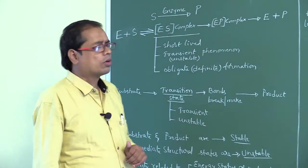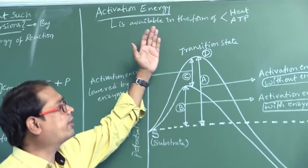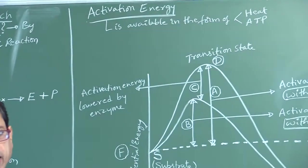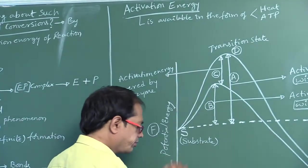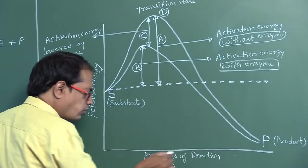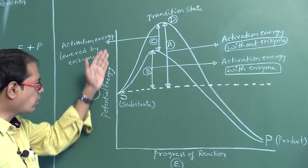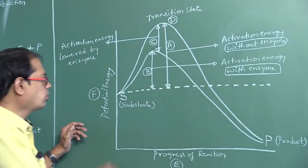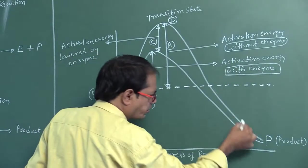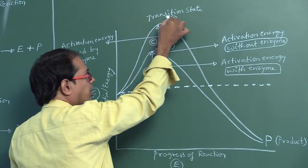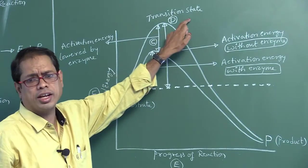Activation energy is available in the form of either heat or ATP. Looking at this diagram: on the X axis, progress of reaction is taken; on the Y axis, potential energy is taken. The substrate S is converted into products. S reaches a new structure called the transition state.